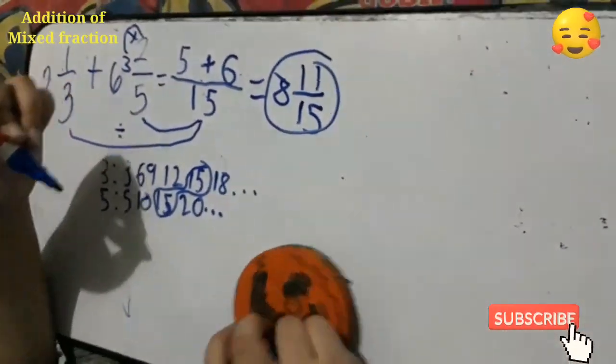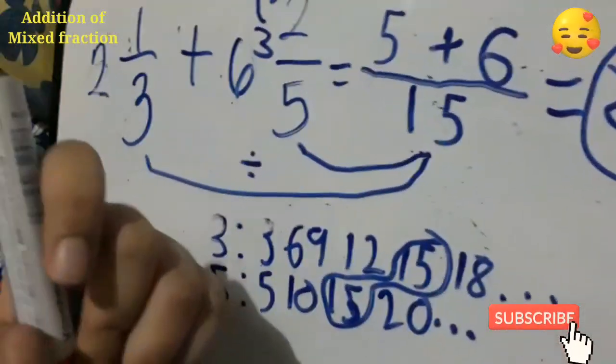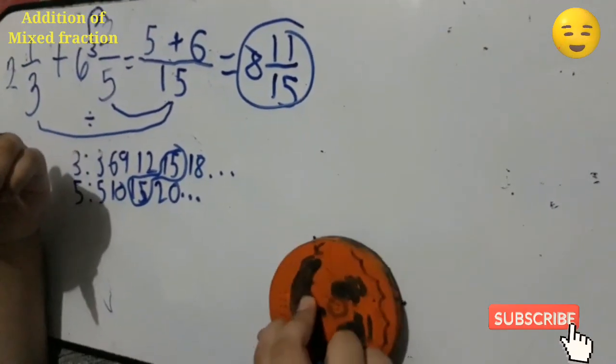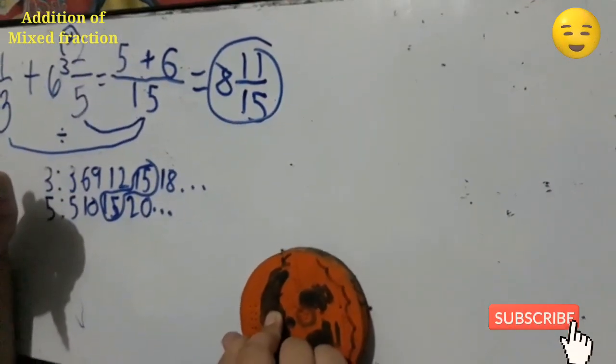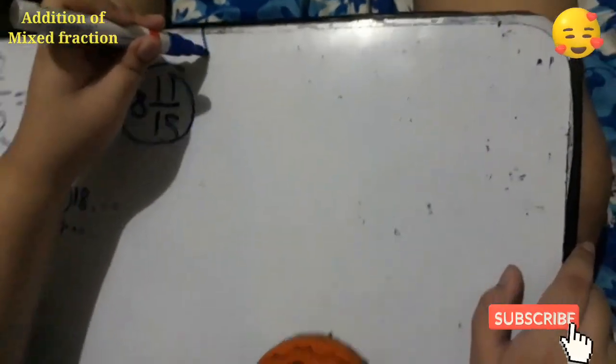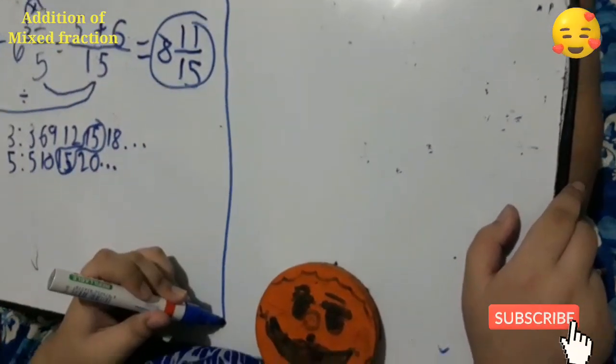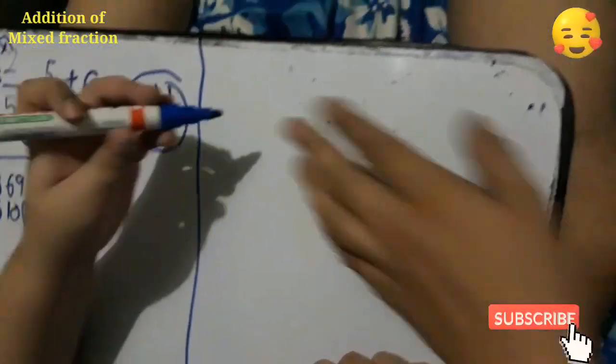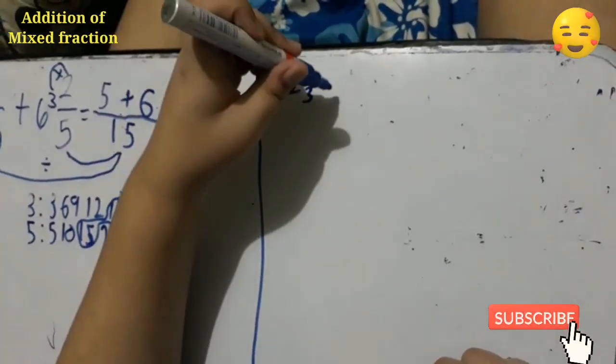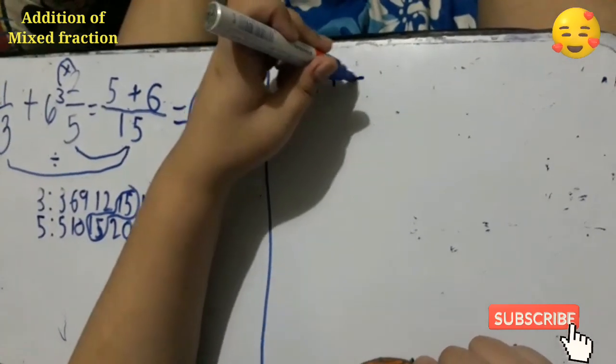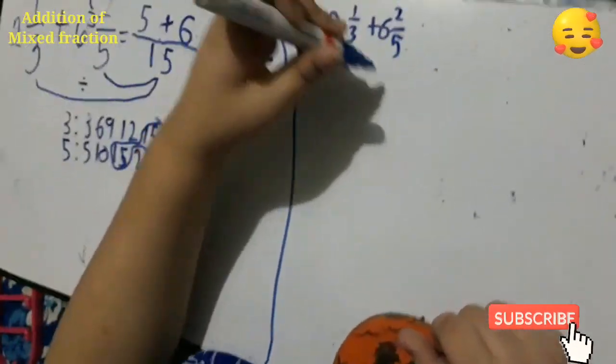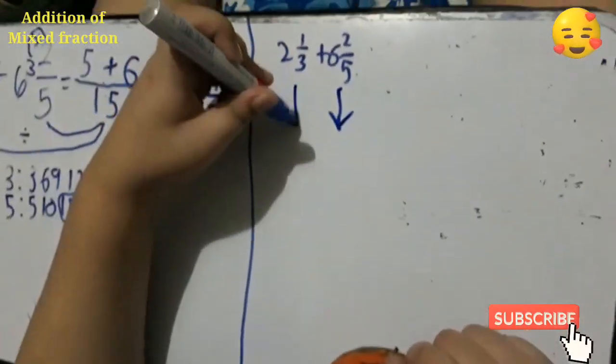How about a different way. The mixed fraction changed to improper fraction. We can make a comparison if the answer is the same. So you put a line here. We're gonna put another thing here. So you just copy the given: 2 and 1 third, plus 6 and 2 over 5.